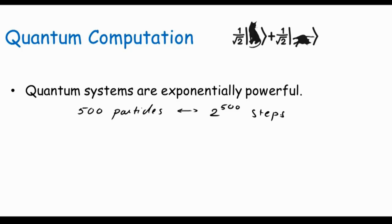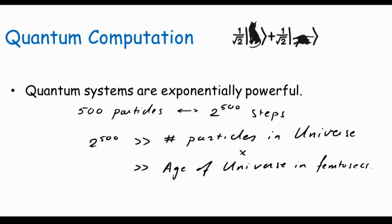Now, how big is 2 to the 500? It sounds like a large number, but the interesting thing is 2 to the 500 is an impossibly large number. So 2 to the 500 is much larger than estimates for the total number of particles in the universe. It's also much larger than estimates for the age of the universe in femtoseconds. In fact, it's much larger than the product of these two quantities.